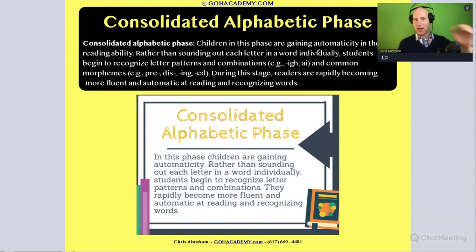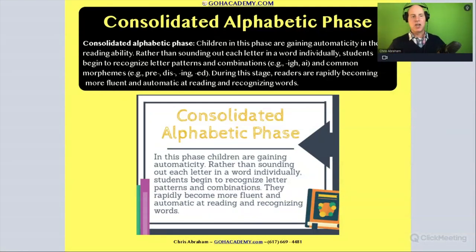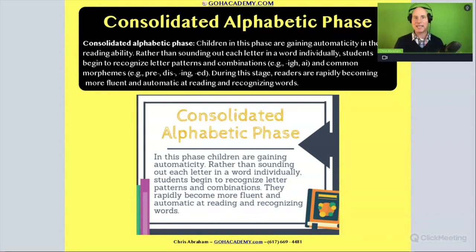The consolidated alphabetical phase is that final stage before automaticity. Basically, this is the stage where we start to see students approach automaticity — they're using a lot of letter-sound correspondence and phonics patterns to recognize words.